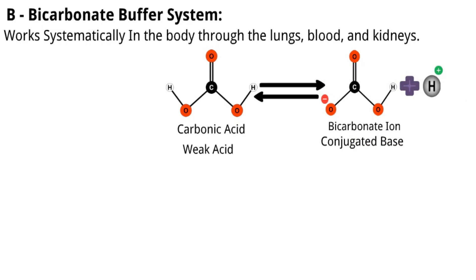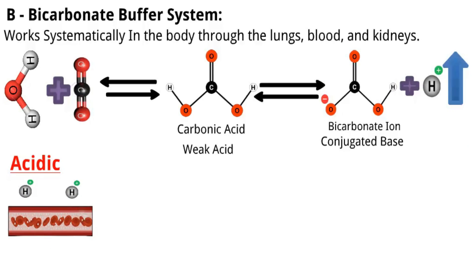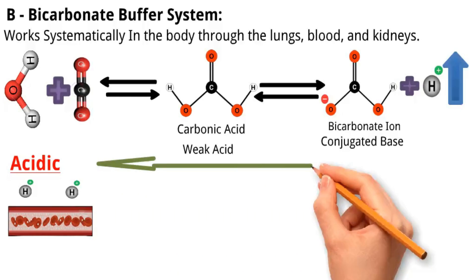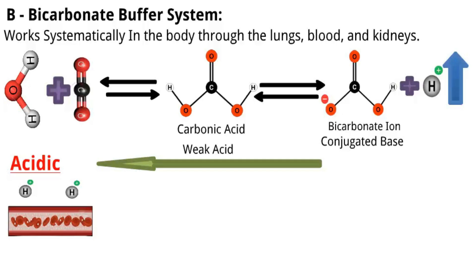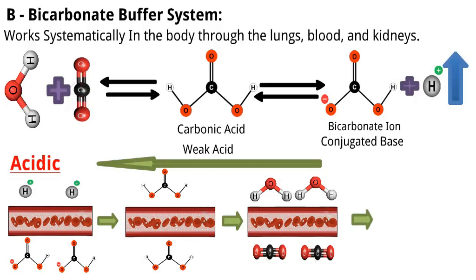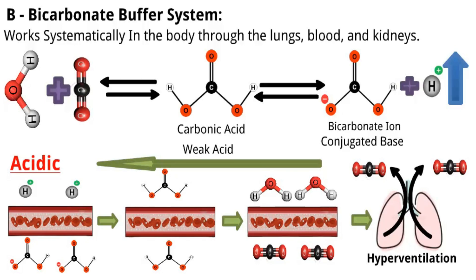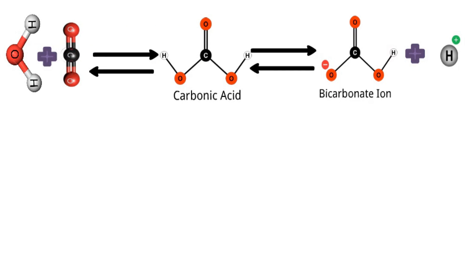It is important to know that carbonic acid can easily dissociate into water and carbon dioxide. In acidic conditions, when there is an increase in the concentration of protons in the blood, the equilibrium of the bicarbonate buffer system shifts to the left. The excess protons combine with bicarbonate ions to form carbonic acid, which dissociates into water molecules and carbon dioxide. The lungs then play a role in eliminating carbon dioxide by increasing the rate and depth of breathing, known as hyperventilation, expelling carbon dioxide and helping reduce acidity in the blood.